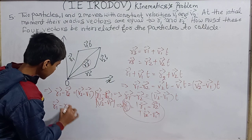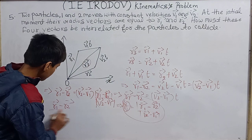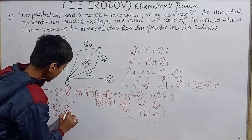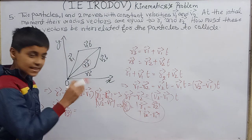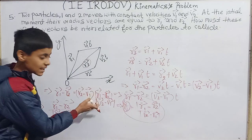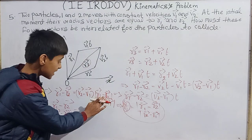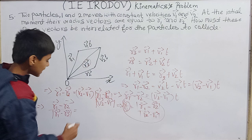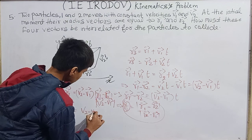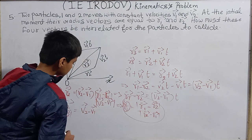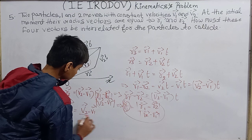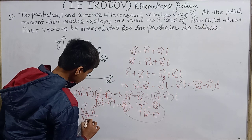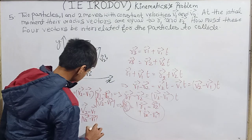The result simplifies to: (vector r₁ minus vector r₂) divided by |vector r₁ minus vector r₂| equals (vector v₂ minus vector v₁) divided by |vector v₂ minus vector v₁|. This means the unit vector along the displacement (r₁ minus r₂) must equal the unit vector along the relative velocity (v₂ minus v₁). This is our correct answer.